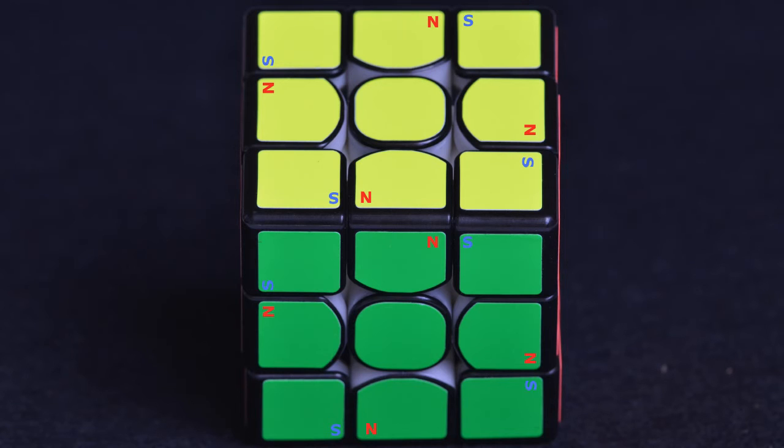Here we see two faces of a cube and the polar representation of the magnets contained within the pieces. As you look around the cube, you'll notice these pairs are repeated over and over, and their general orientation is repeated.